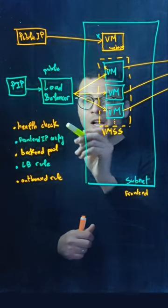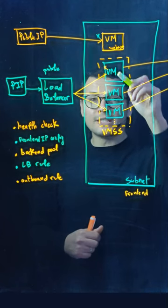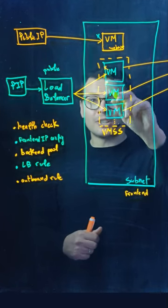For that, it will use a configuration for the health check to detect which virtual machine is healthy. And if it is not healthy, then it will not route traffic to that VM.